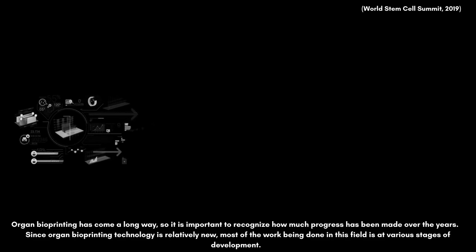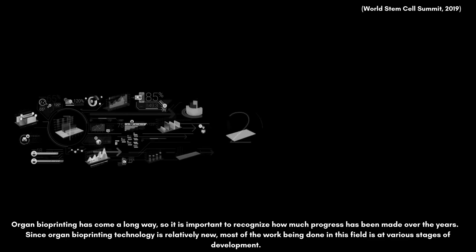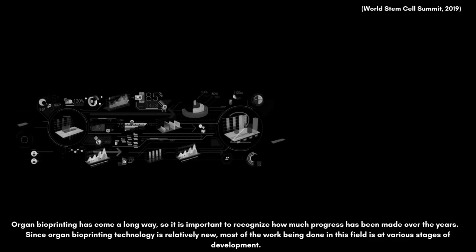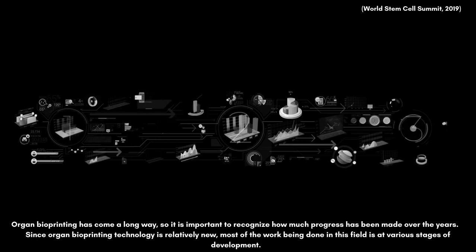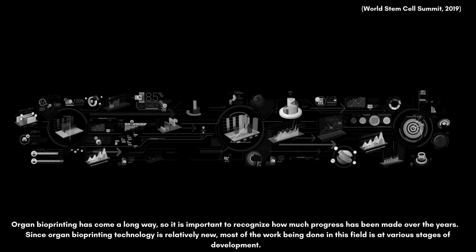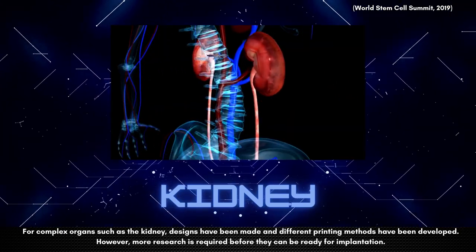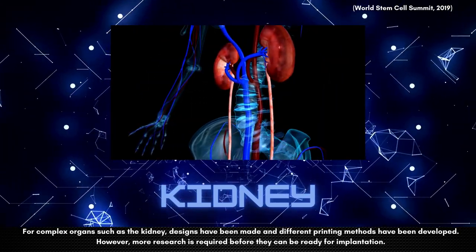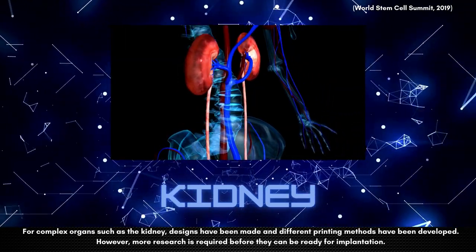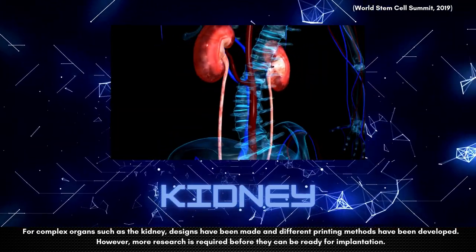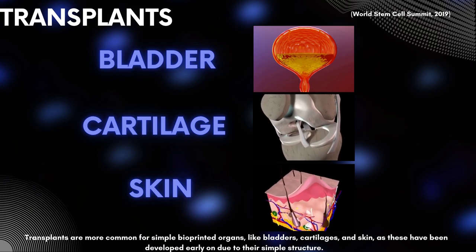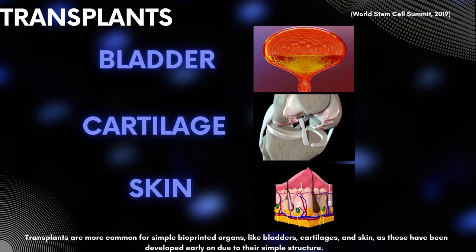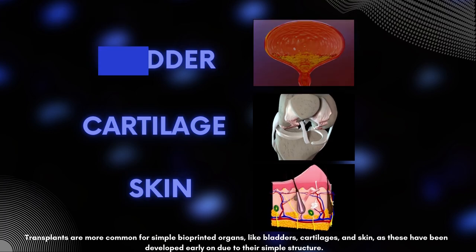Organ bioprinting has come a long way, so it is important to recognize how much progress has been made over the years. Since organ bioprinting technology is relatively new, most of the work being done in this field is at various stages of development. For complex organs such as the kidney, designs have been made and different printing methods have been developed, however more research is required before they can be ready for implantation. Transplants are more common for simple bioprinted organs like bladders, cartilage, and skin, as these have been developed early on due to their simple structure.